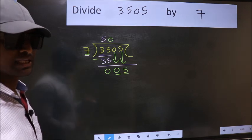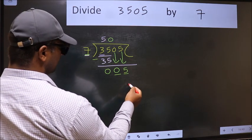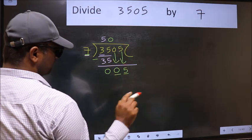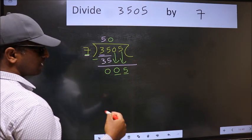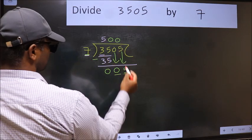Instead, what you should think of doing is, which number should we take here? If I take 1, we will get 7. But 7 is larger than 5. So what we should do is, we should take 0.